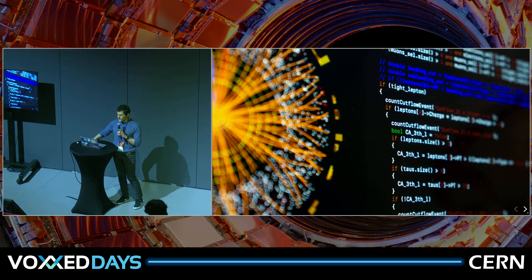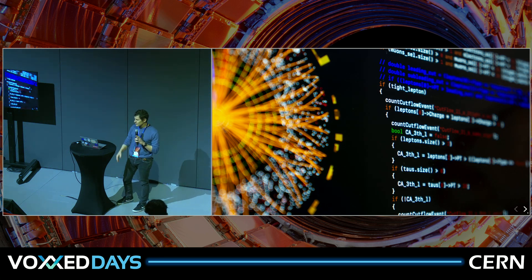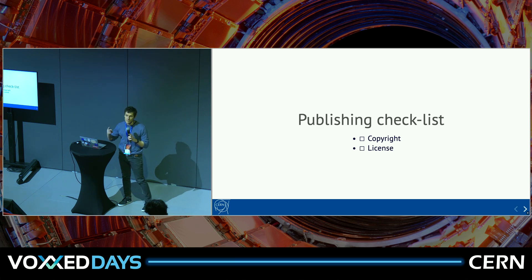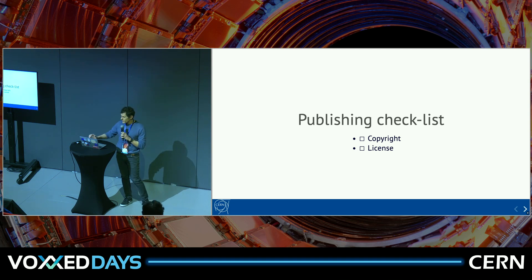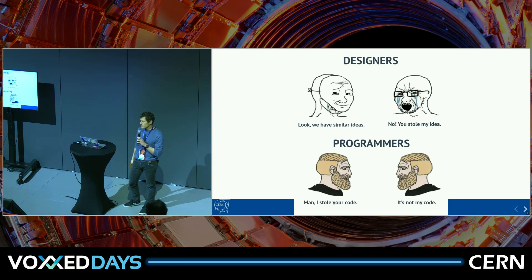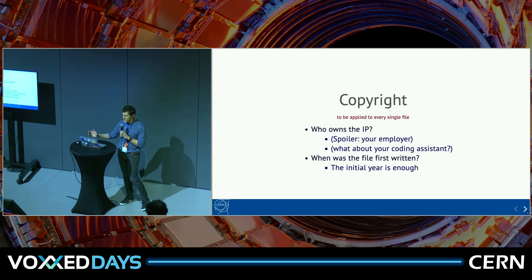Let's say you have a nice piece of code and you want to publish it. The publishing checklist has essentially two boxes: copyright and license. Copyright is about knowing who actually owns the intellectual property of your code. It is typically the person who wrote the code, but if you're coding for a living, your employer typically owns the intellectual property. If a file is shared between contributors, depending on how significant those changes are, they may also own intellectual property on that file.